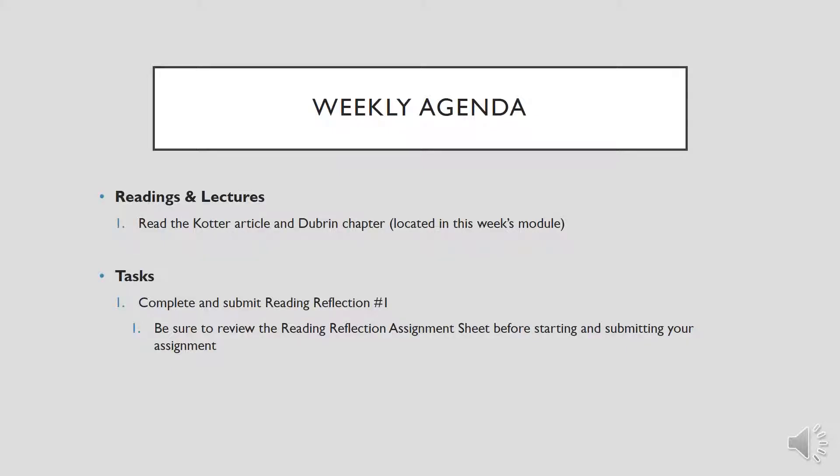We're going to read from two ancillary documents, both located in this week's module — you won't find these in your course textbook but rather on our e-learning homepage. The first is the Cotter article, which talks about the differentiation between leaders and managers. Then you'll read the DuBrin chapter, which looks specifically at motivation. These are fundamental attributes of leading and following.